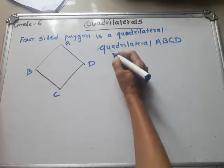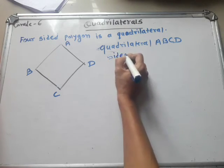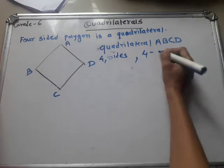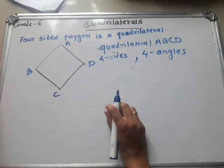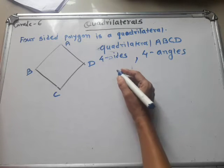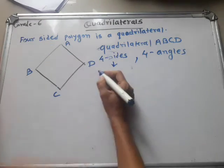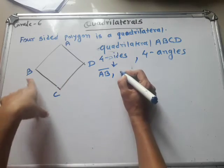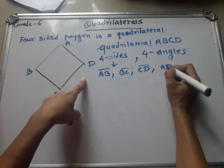The quadrilateral has four sides and four angles. Here are four sides. We write the sides as: AB, BC, CD, and AD. These are the sides.